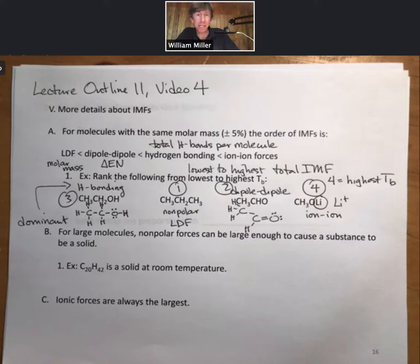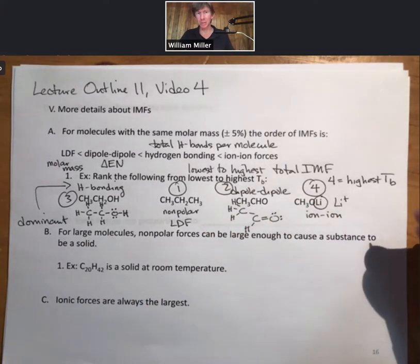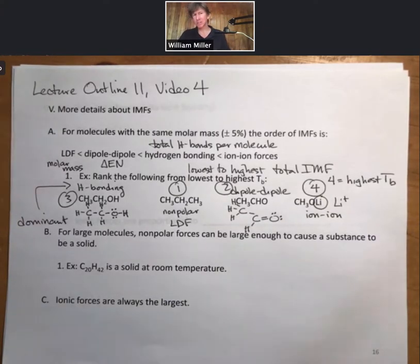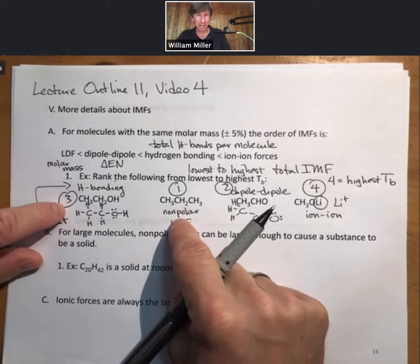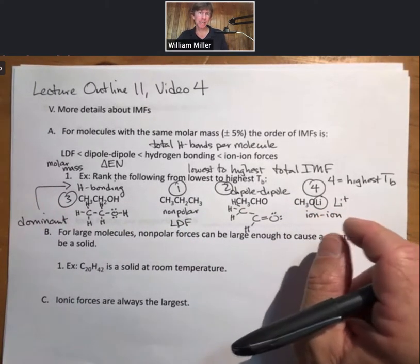That's the kind of analysis we're going to ask you to do on the exams. You're going to have to be able to look, draw Lewis structures, interpret polar versus nonpolar. On exams, what I've found is the best way to do this is just to ask you two at a time. You won't be ranking four, except on the homework to get an idea of how to work them.